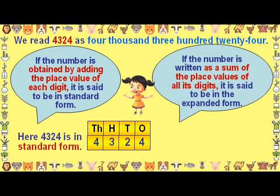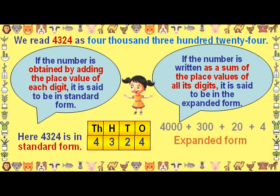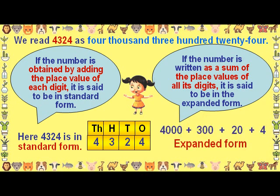If the number is written as a sum of the place values of all its digits, it is said to be in the expanded form. Here 4000 plus 300 plus 20 plus 4 is written in the expanded form.